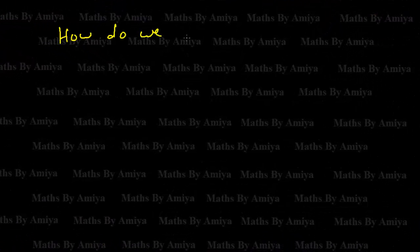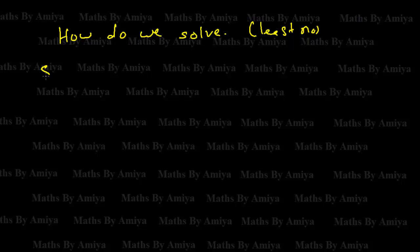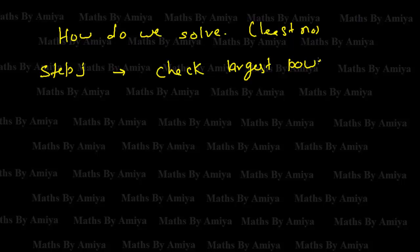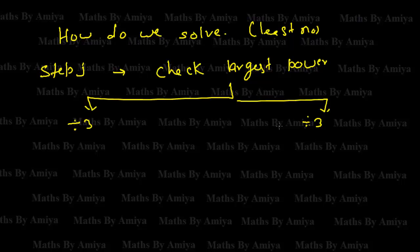The most important thing is how do we solve the question and what should be our approach to find the least number. Step 1: check the largest power — is it divisible by 3 or not? If the largest power is divisible by 3, work backward to find the least number. If the largest power is not divisible by 3, work forward to find the least number.